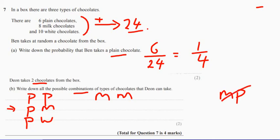So I'm not going to count that. But we could have milk and white. And then we could also have white followed by white. So there's six combinations that we could possibly have.